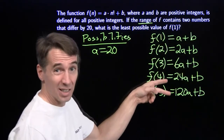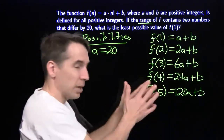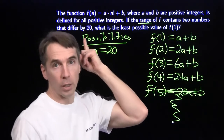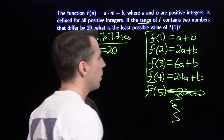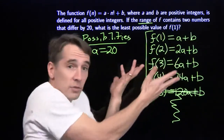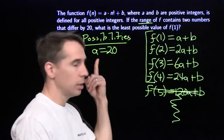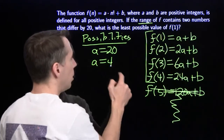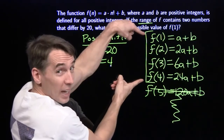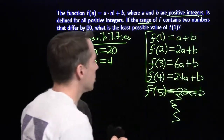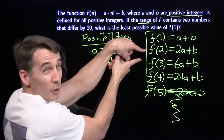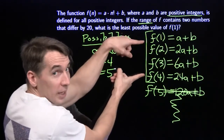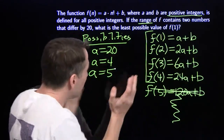For f(5) onward, the spacings grow even larger — far more than 20 — so we only need to consider f(1) through f(4). Checking all pairs: f(1) and f(2) differ by a, giving a=20. f(1) and f(3) differ by 5a, giving a=4. f(2) and f(3) differ by 4a, giving a=5. Pairs involving f(4) give differences of 18a or 22a, which would make a non-integer — those don't work.